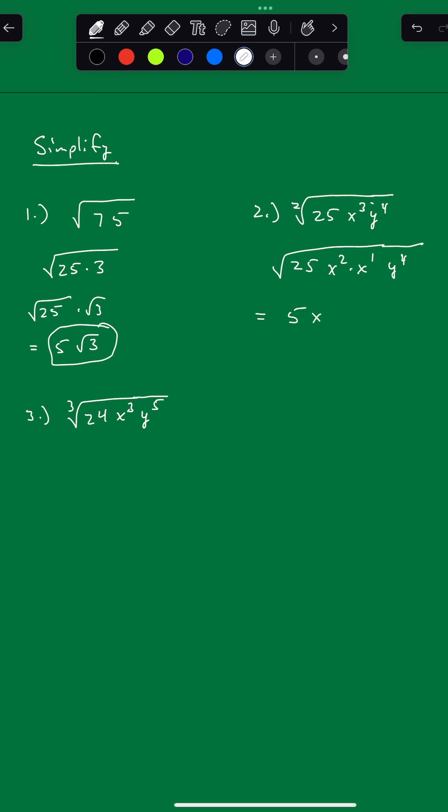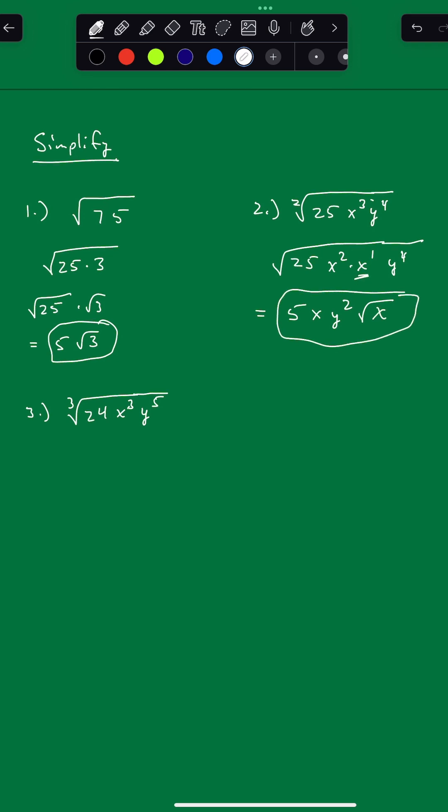And then for the y to the 4th, 2 goes into 4 two times, so that's y squared. And the x, this x right here, has to stay underneath, and so there's your answer.